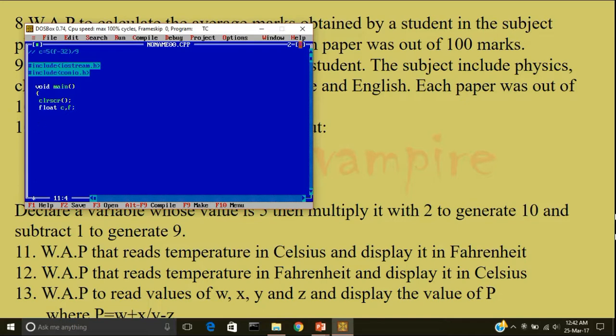I'll display on the monitor screen. Cout. Enter the temperature in Fahrenheit. Go to a new line. Followed by semicolon. C in F. Now, I'll use the formula.